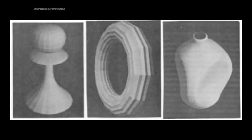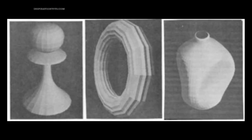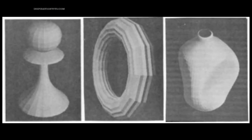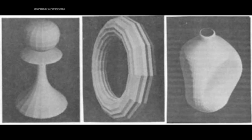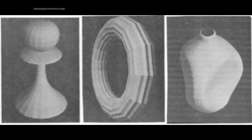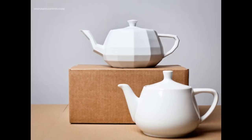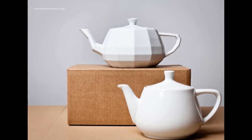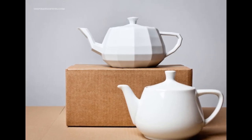But he struggled to find a digitized object worthy of his methods. Objects typically used for simulating reflections, like a chess pawn, a donut, and an urn, were too simple. For his work, Newell needed a simple mathematical model for a familiar object.